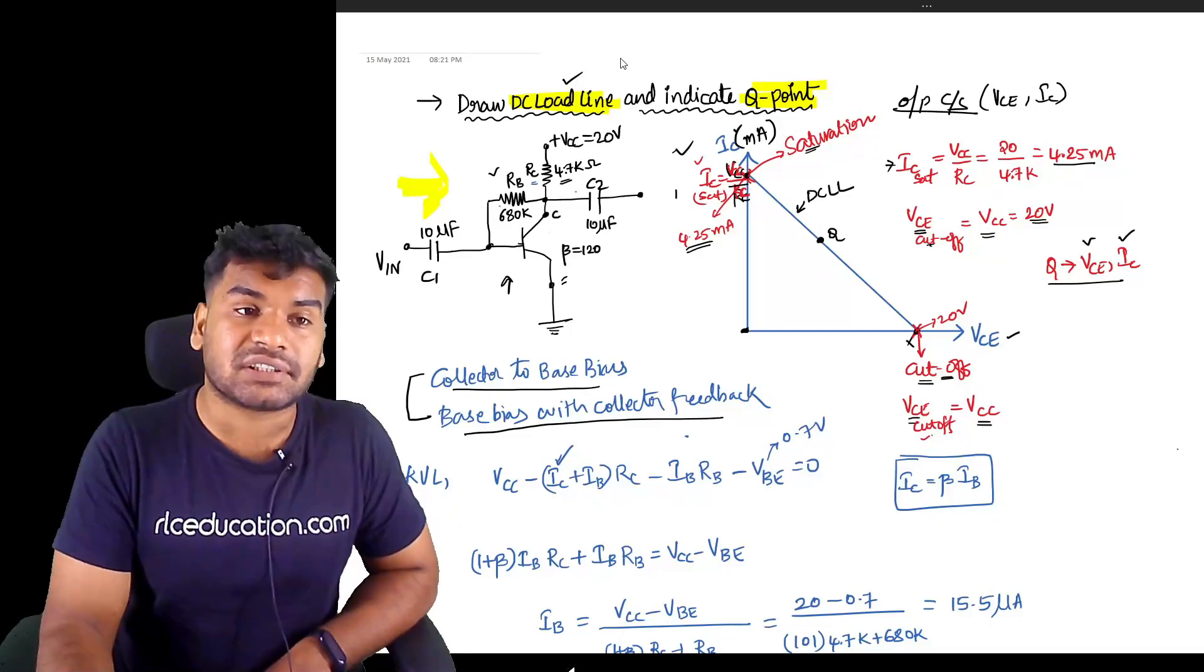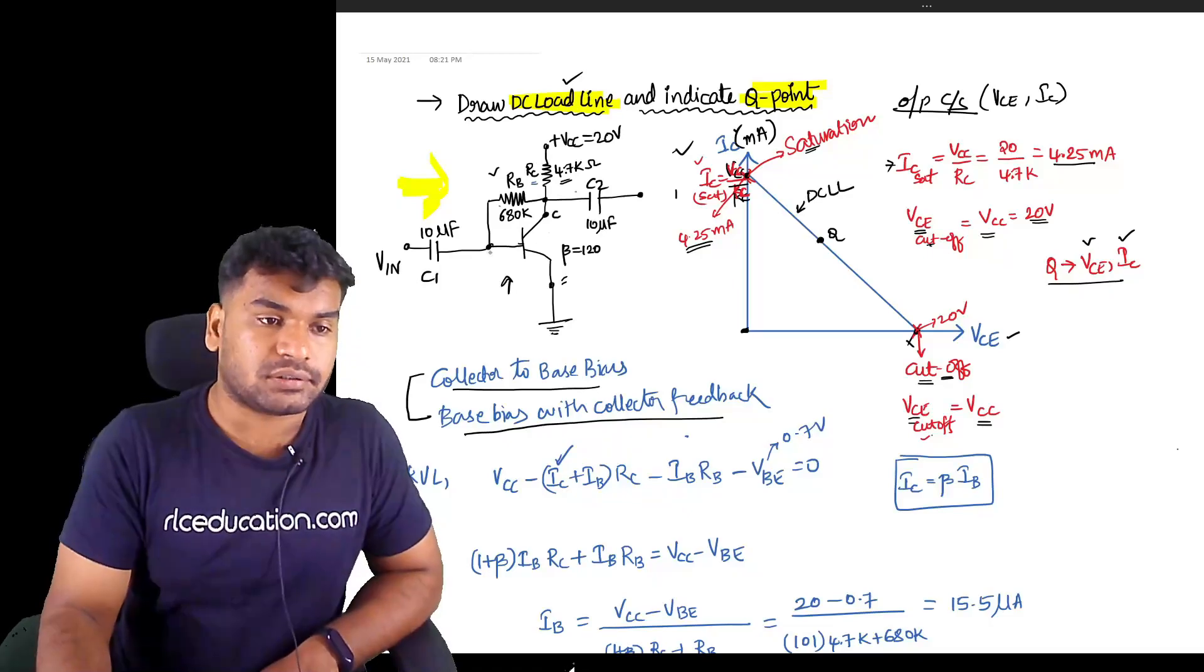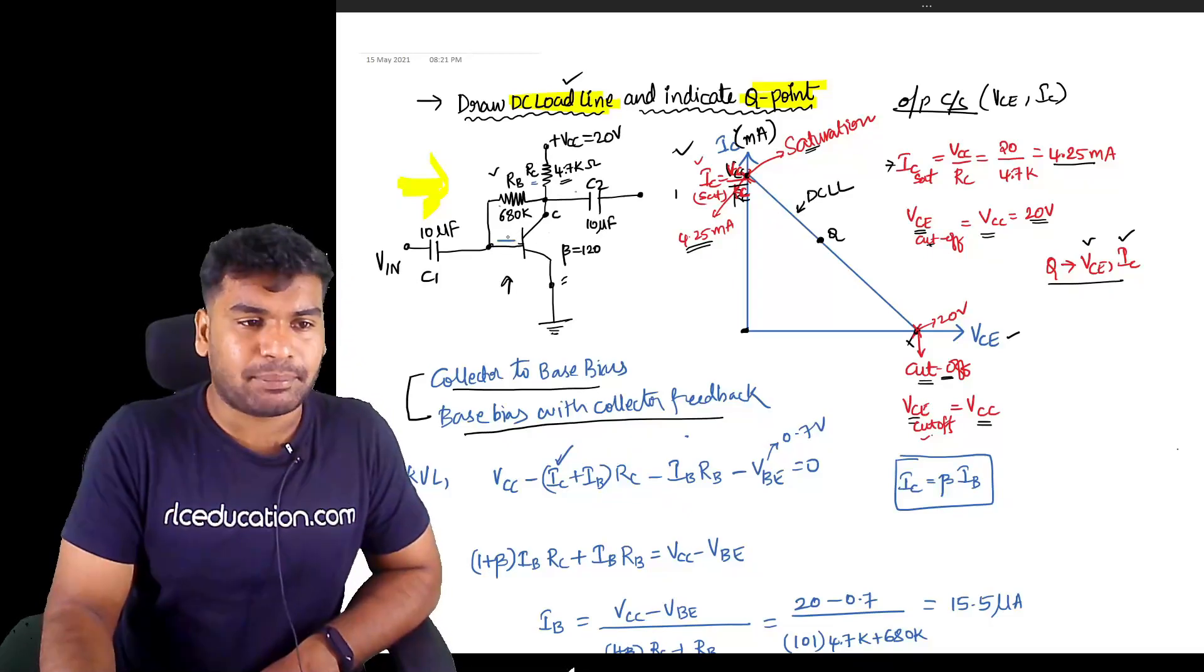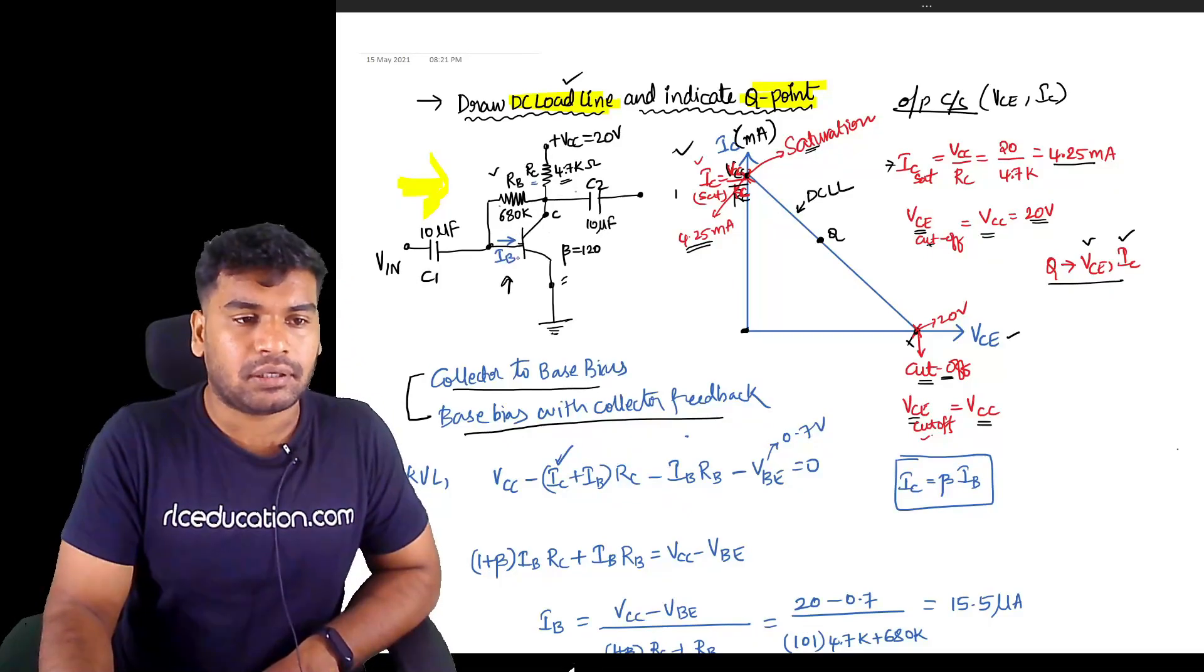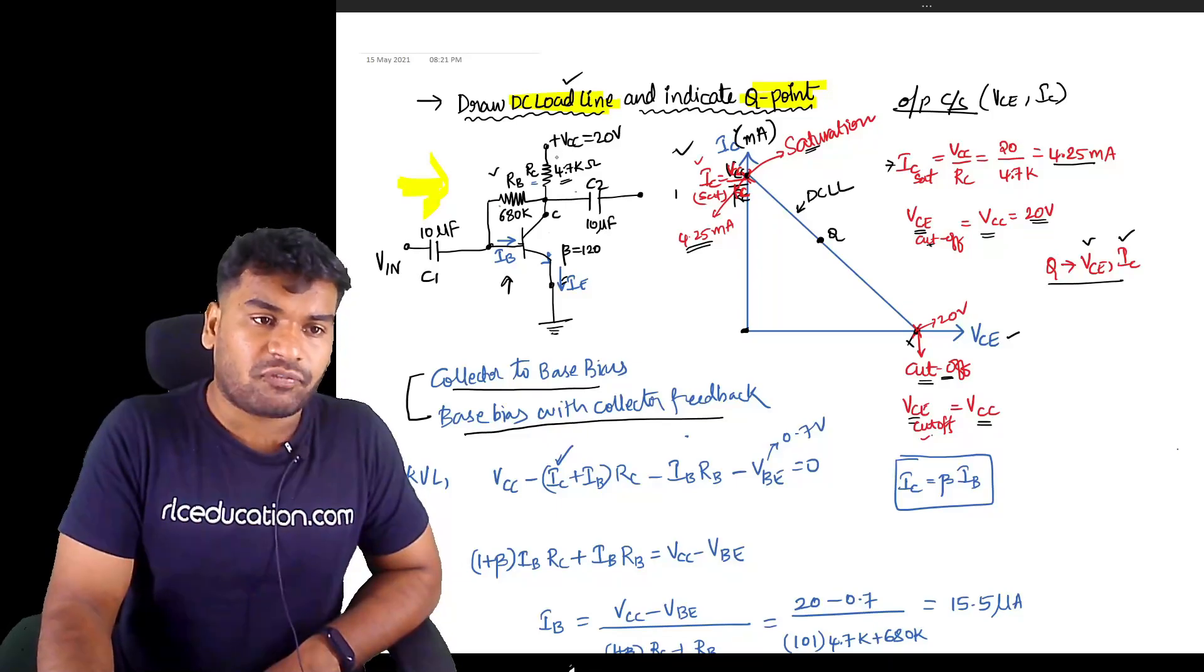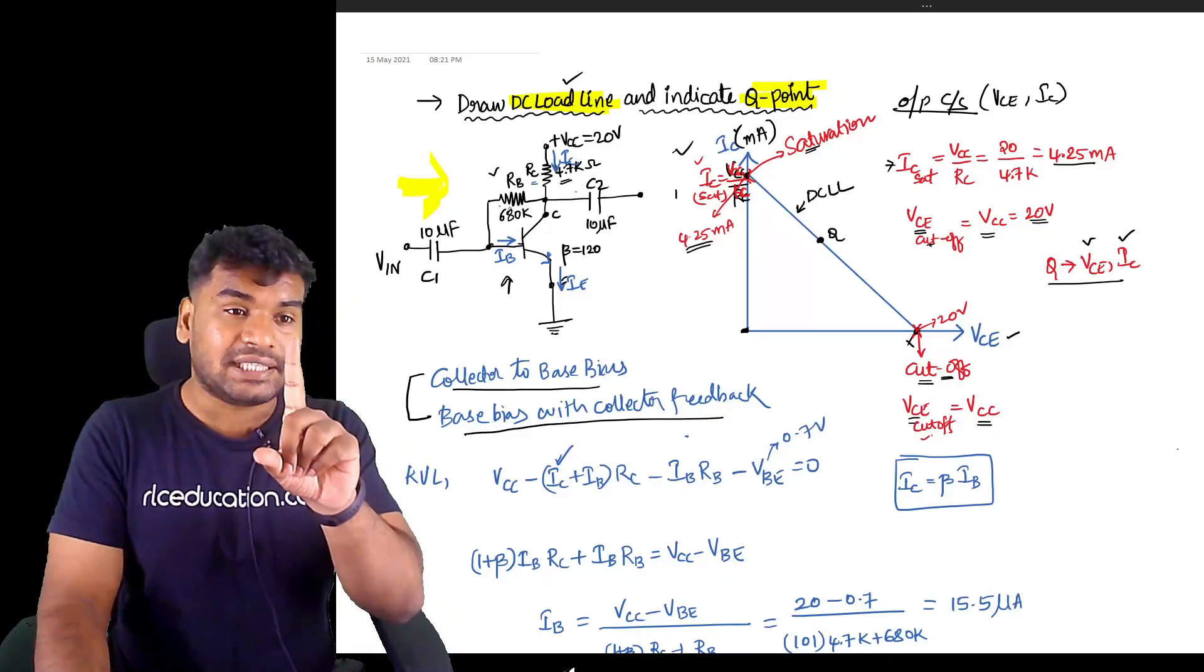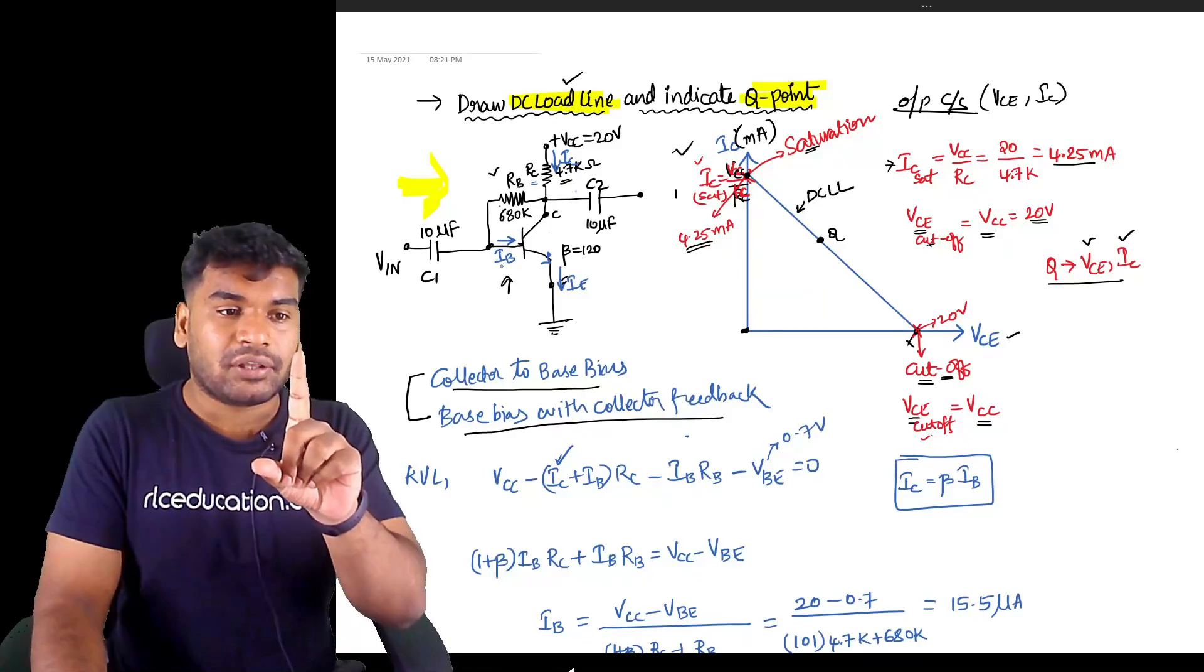First and foremost, what we have to do is mark the directions of current. Current entering this is the base terminal - that is IB. This is emitter terminal going down - IE. And obviously from here must come IC.